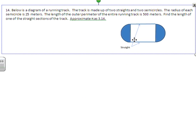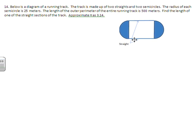Final problem. We have a diagram of a running track, and it's made up of two straights and two semicircles. The radius of each semicircle is 25 meters. So I'm going to label from here to the edge is 25 meters. The length of the outer perimeter of the entire running track is 500 meters. So all the way around that distance equals 500 meters.